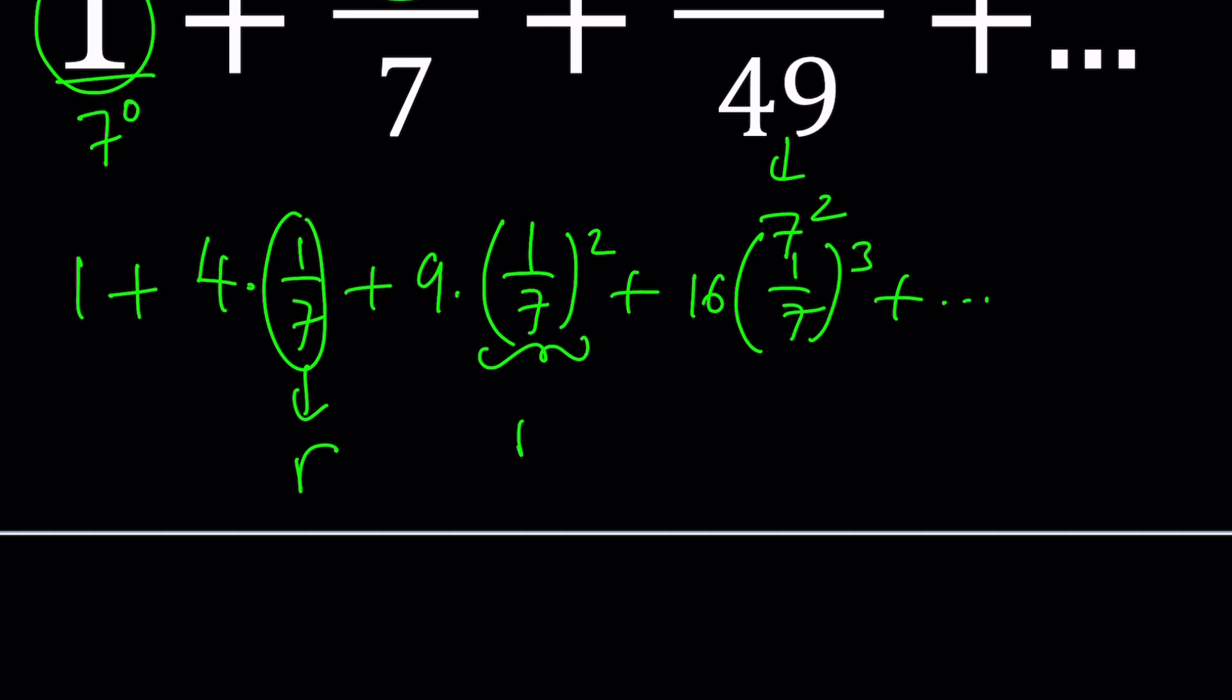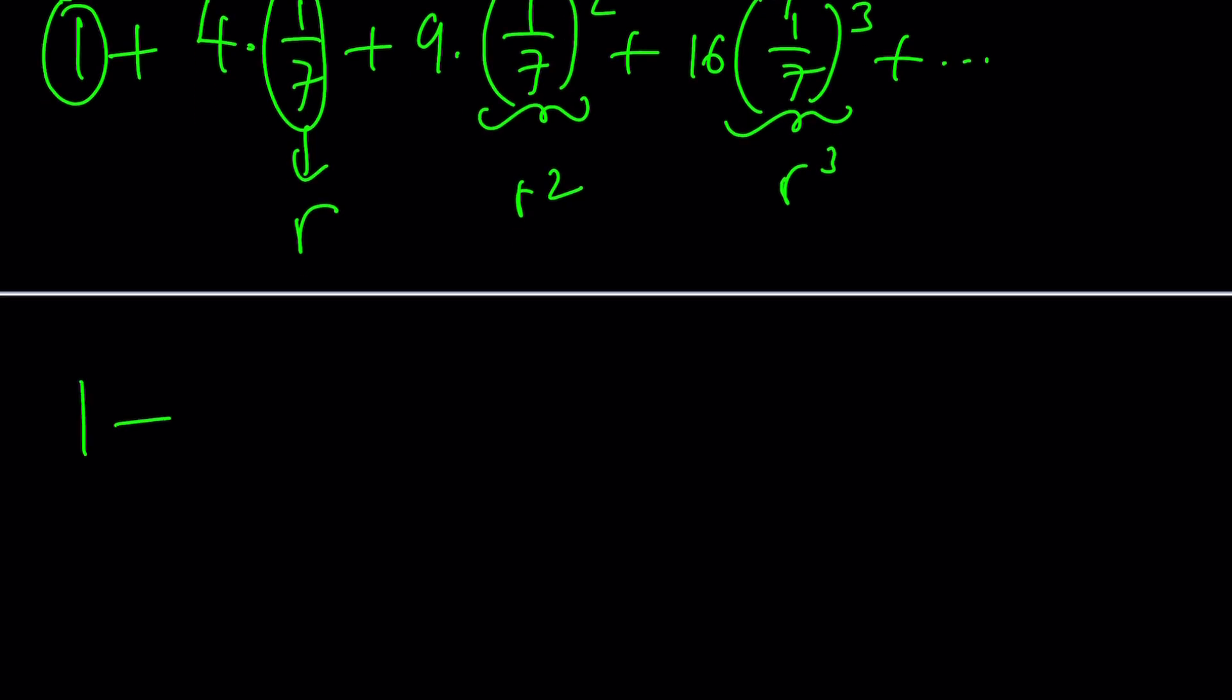R is very common with geometric series and this kind of looks like one or maybe something we can derive. So this is going to be called R. Then this will be R squared. Then this will be R cubed. So what do we have? We have 1 as the first term plus 4R plus 9R squared plus 16R cubed, so on and so forth.